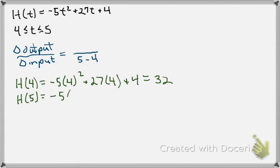And the same thing, now we're going to do, except we're plugging 5 in instead of 4, plus 27. This time it will be times 5 plus 4, which equals 14.